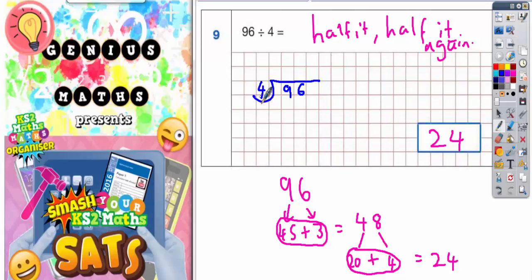So how many 4s will go into 9? Well, two 4s will go into 9, but that's only 8, so there's one left over. Carry the 1 to the next column to make 16. How many 4s in 16? Well, if you know your 4 times table, you'll know that 4 times 4 is 16. So that will be a 4.